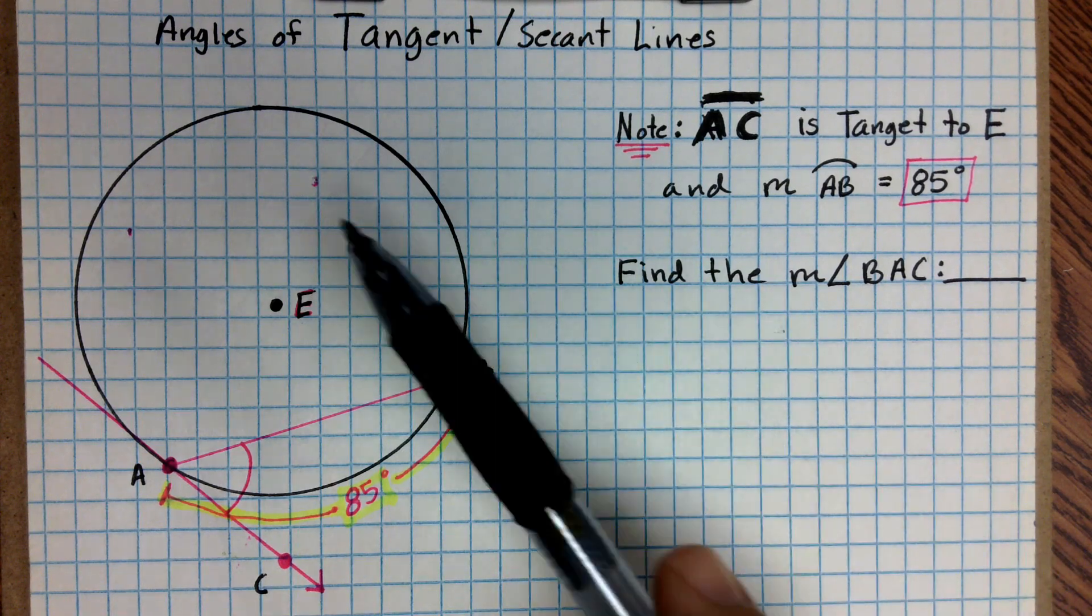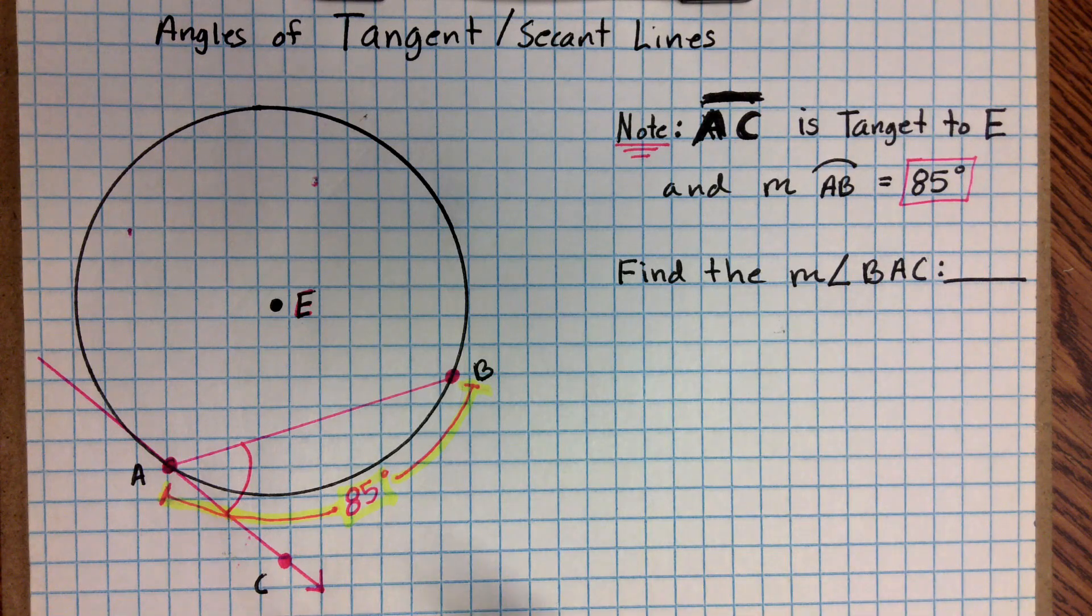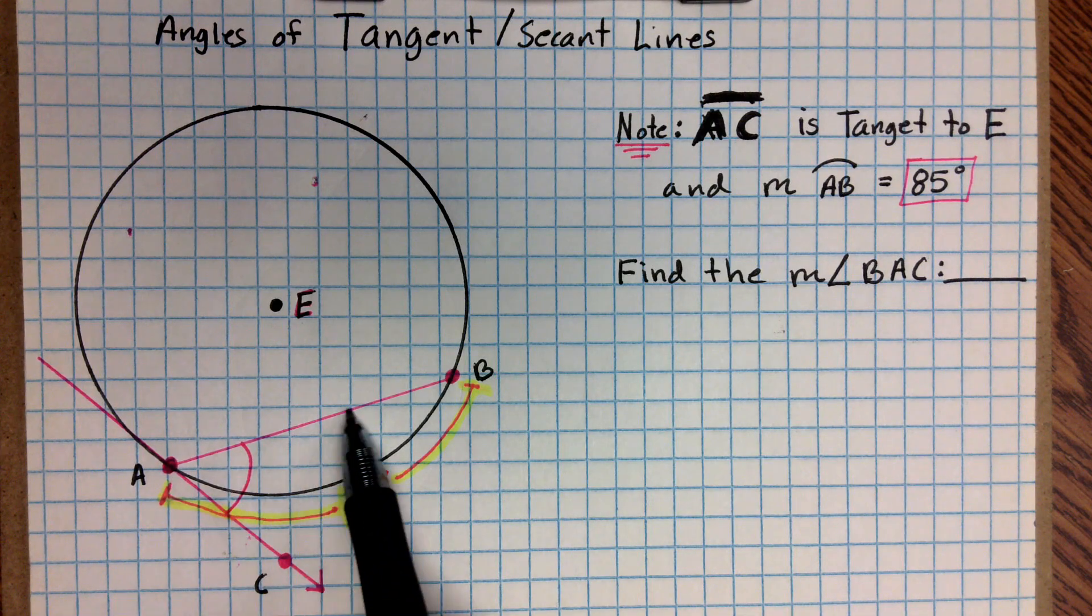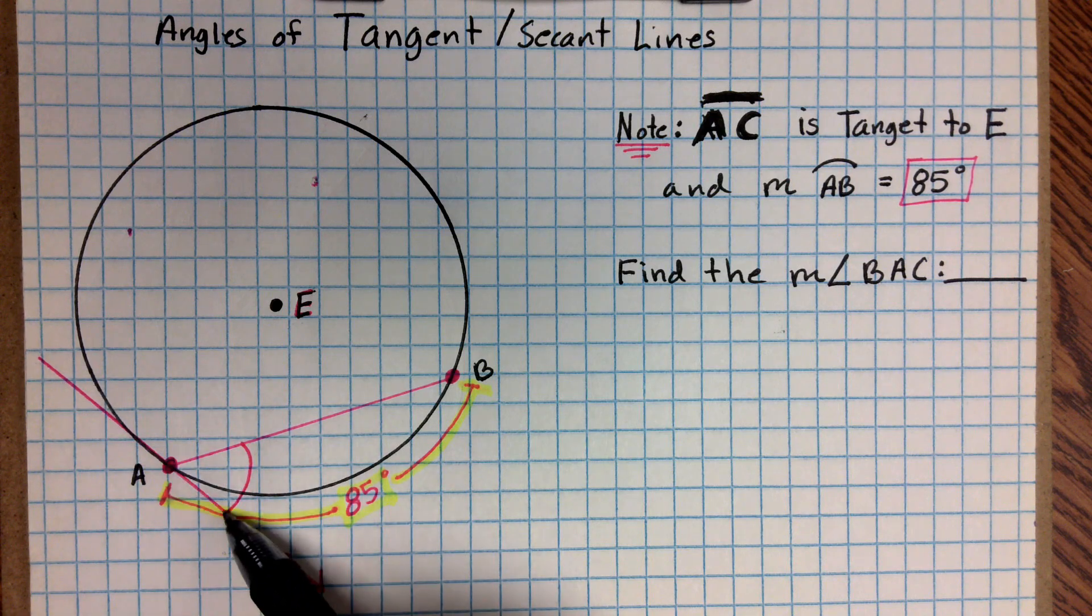In this particular example, notice that we're talking about angles of tangent and secant lines. So we have a secant line right here that goes across the circle, and we have a tangent line that runs here.